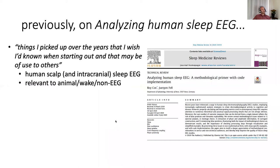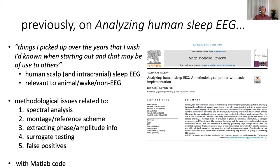So last year when I was working in the lab of Jurgen Fell, we published this paper analyzing human sleep EEG. Essentially, it's an overview of things I picked up over the years that I wish I'd known when starting out. It's mostly based on my experience doing human scalp and some intracranial sleep EEG, but many points are also relevant to animal or wake or non-EEG signals. We discussed spectral analysis, montage and reference scheme, extracting phase and amplitude information, surrogate testing, and false positives.